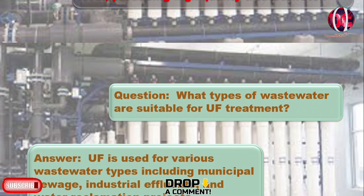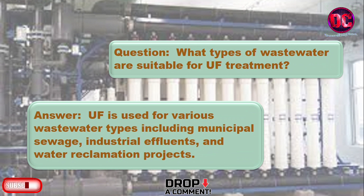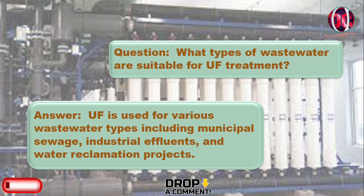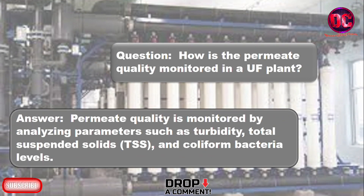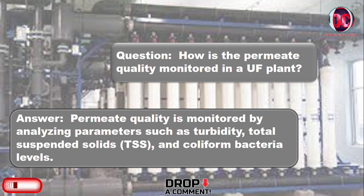What types of wastewater are suitable for UF treatment? UF is used for various wastewater types including municipal sewage, industrial effluents, and water reclamation projects. How is the permeate quality monitored in a UF plant? Permeate quality is monitored by analyzing parameters such as turbidity, total suspended solids (TSS), and coliform bacterial levels.